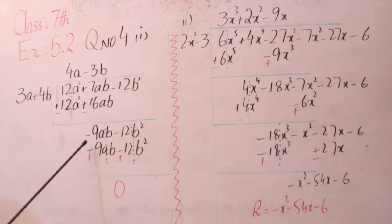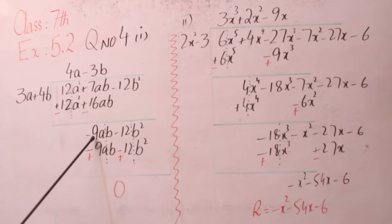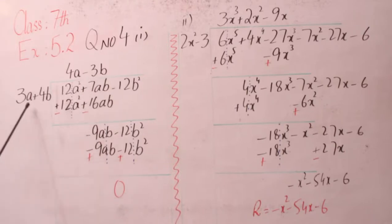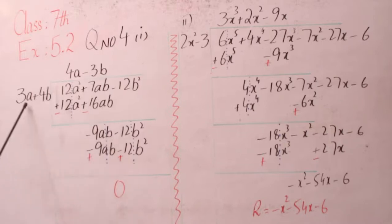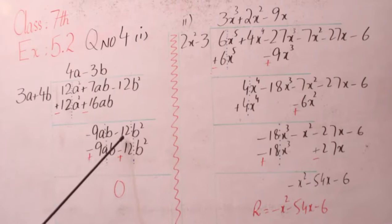جو value بنانی ہے وہ ہم نے بنانی ہے minus 9ab۔ یہ 3a ہے، سب سے پہلے ہمیں sign چاہیے minus کا، وہ ہم نے لگا دیا۔ پھر 3×3=9، 9 ہمارے پر پورا ہو گیا۔ پھر ab یہاں پر a موجود ہے لیکن ہمیں b بھی چاہیے ساتھ میں، تو ہم نے یہاں پر 3b سے multiply کر دیا: 3×3=9، a اور b کے ساتھ ab لکھ دیا۔